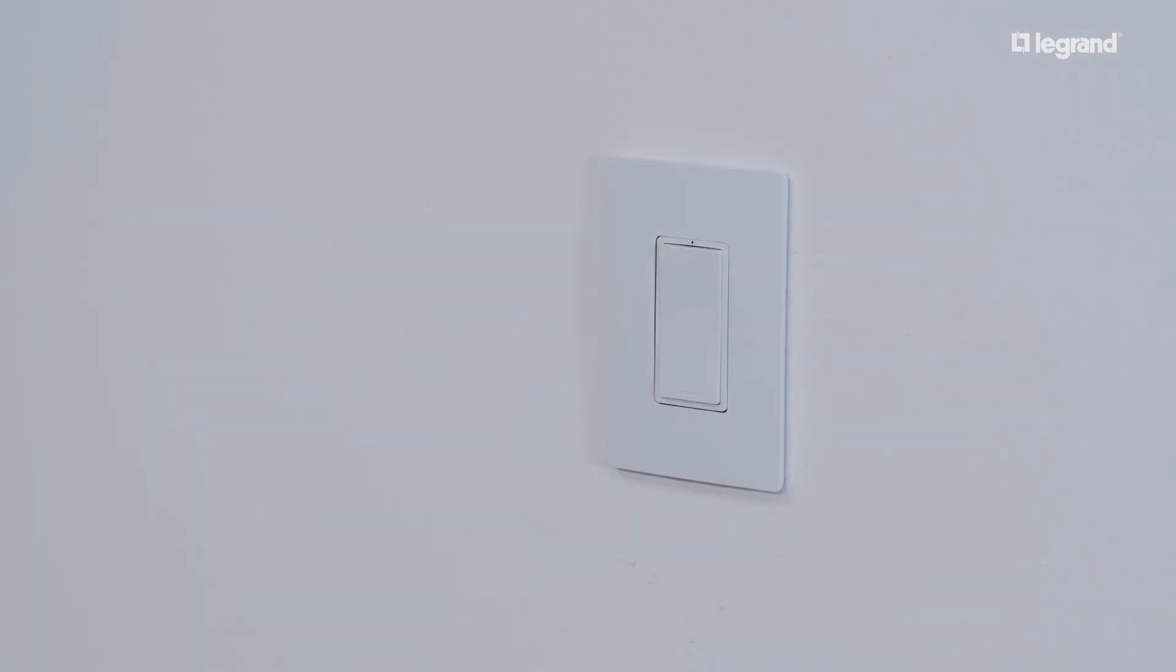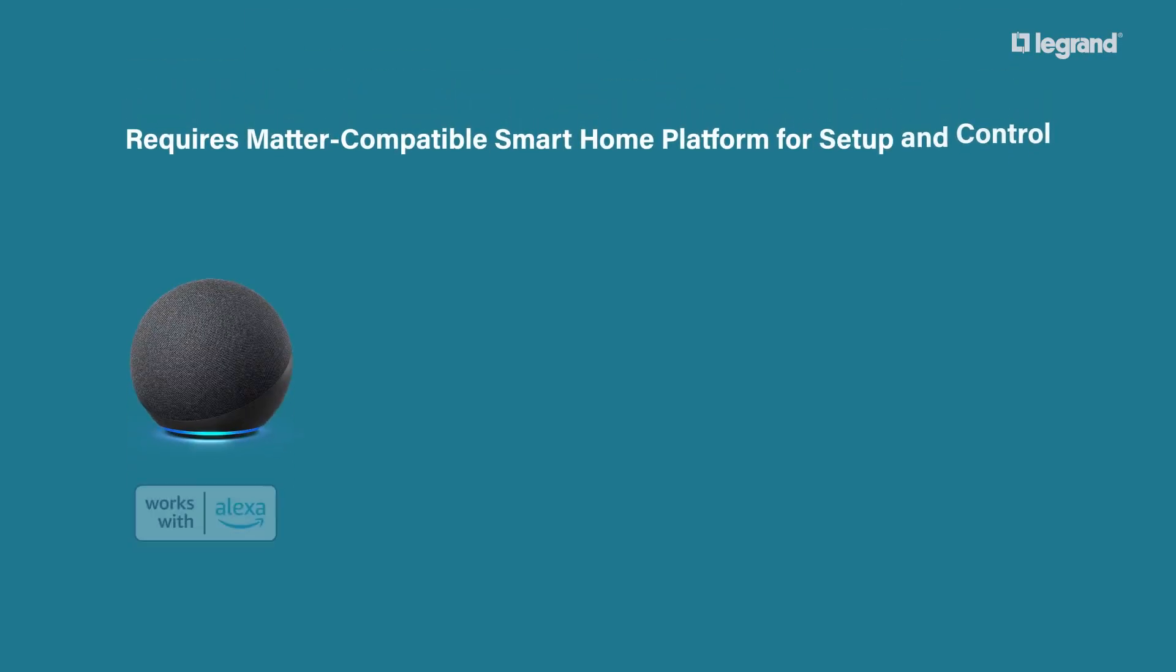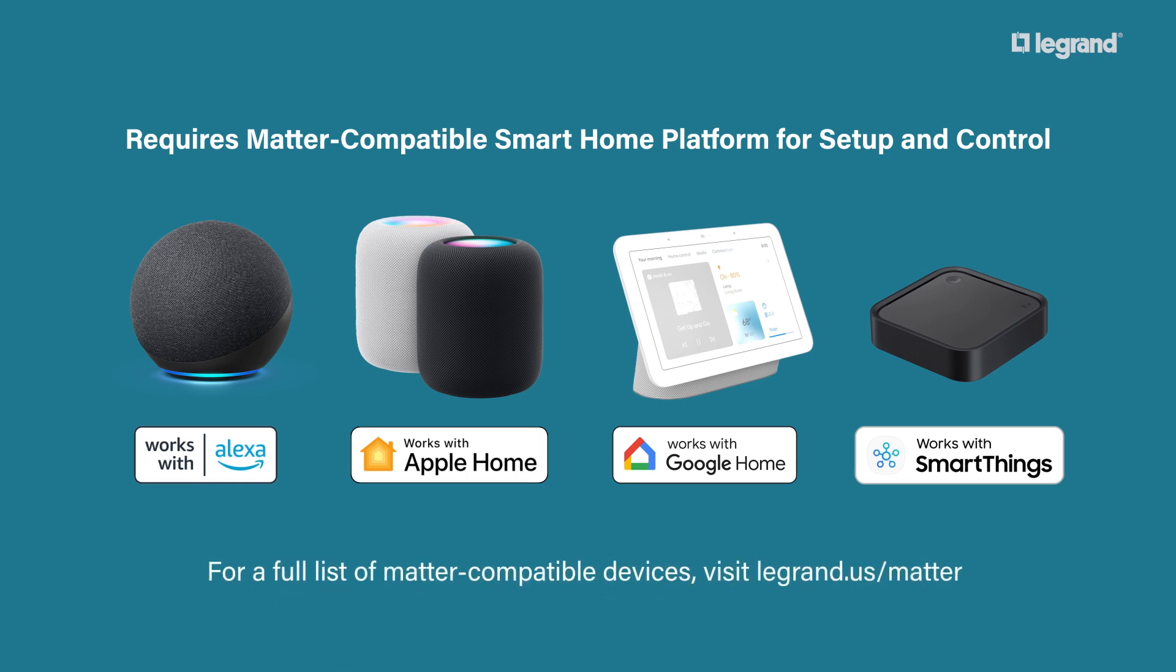After the installation is complete, the device is now ready to be onboarded to your smart home platform of choice. The second generation of Radiant Smart Lighting with Wi-Fi devices are Matter-enabled and require a Matter-compatible smart home hub for setup and control from either Amazon, Google, Apple, or Samsung. For more information, visit legrand.us/matter.